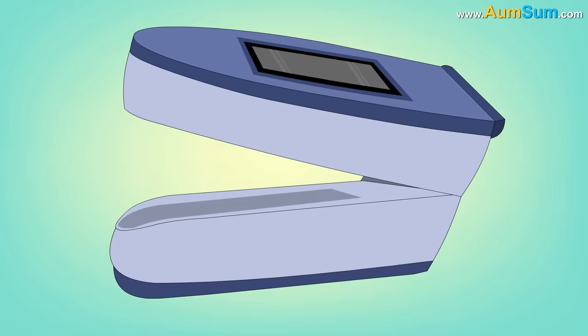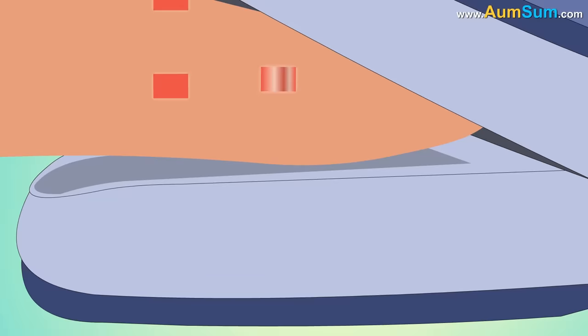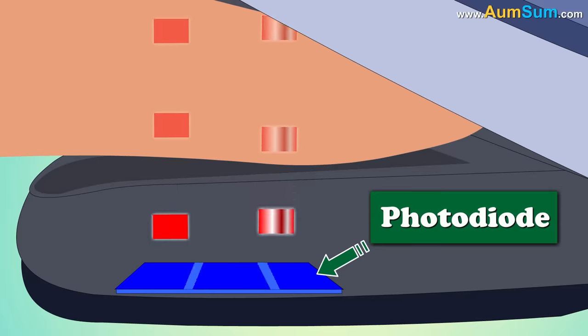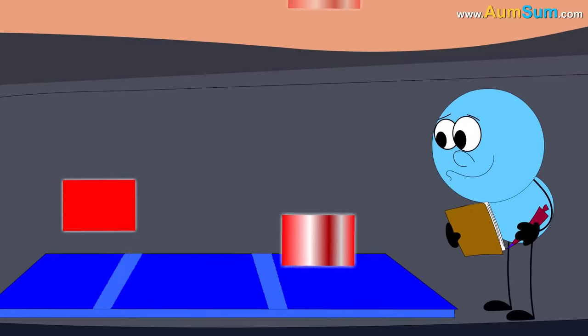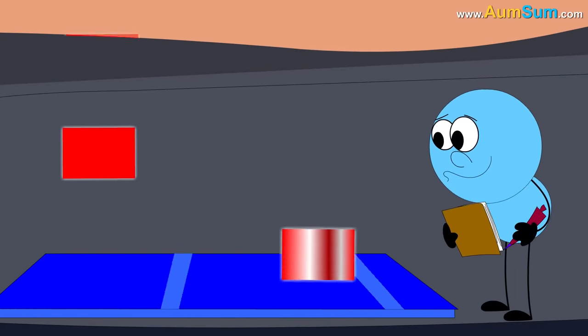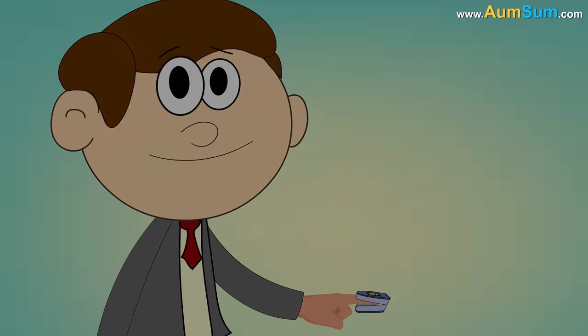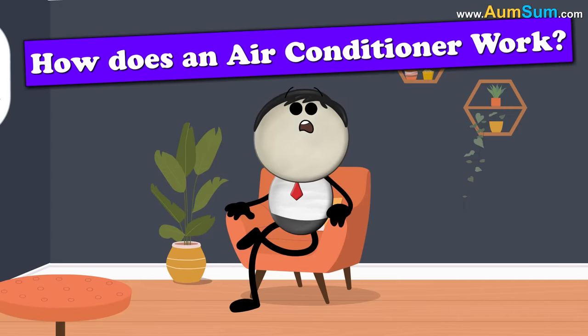Now, a pulse oximeter has LEDs which emit red as well as infrared light. These lights pass through our finger and are detected by a photodiode on the opposite end. Finally, by measuring changes in the light absorption, a pulse oximeter is able to give us the oxygen level in our blood.